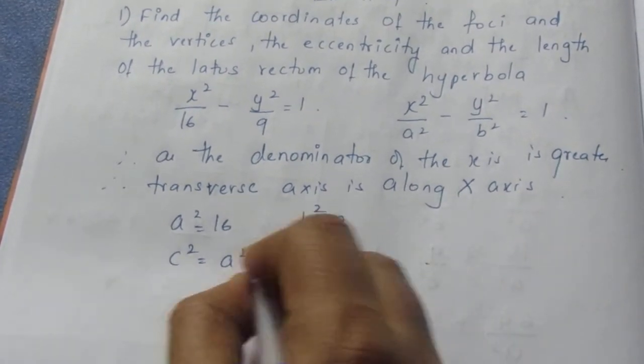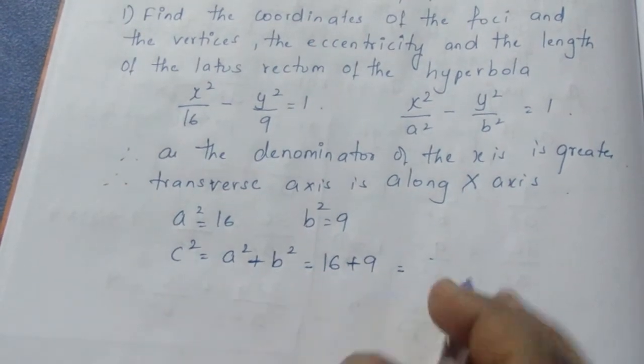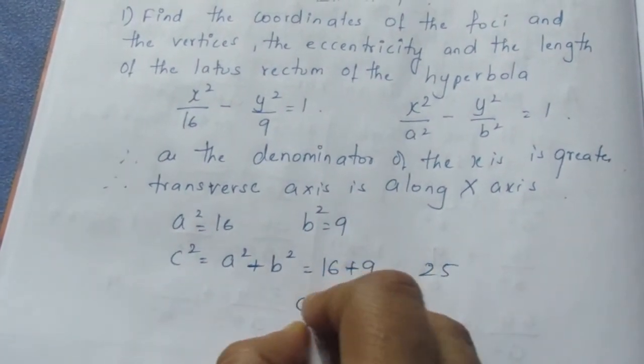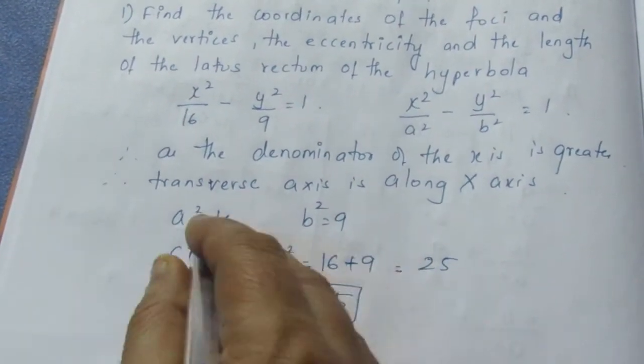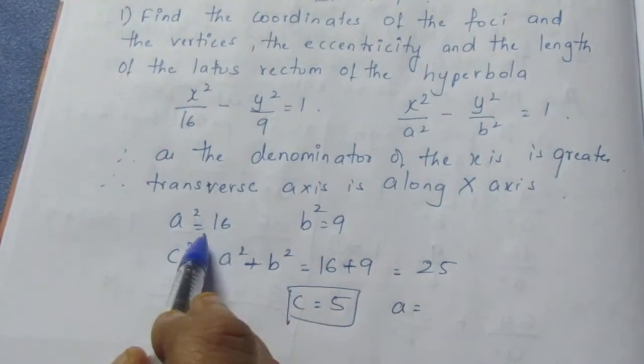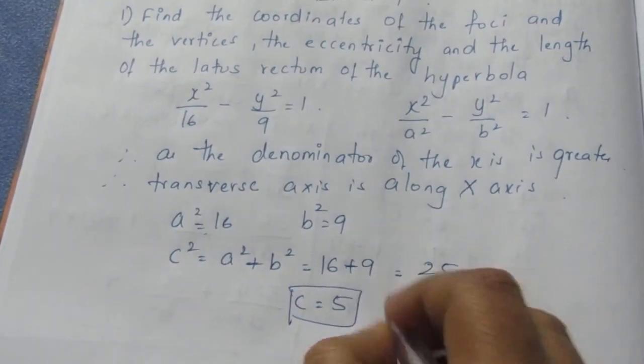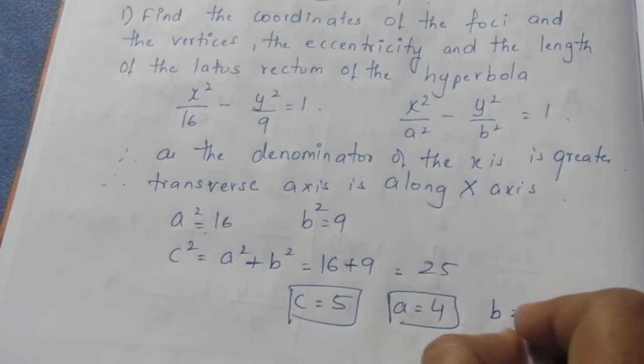So c² = a² + b². That's 16 plus 9, which is 25. So c = 5. Similarly, a = √16 = 4 and b = √9 = 3.